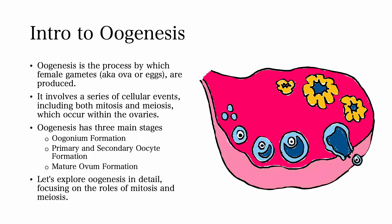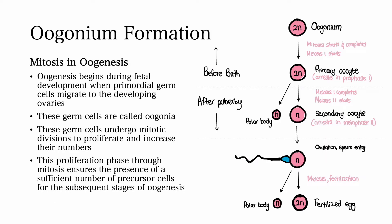Let's consider each in more detail. Oogonium formation — mitosis and oogenesis. Oogenesis begins during fetal development when primordial germ cells migrate to the developing ovaries. These germ cells undergo mitotic divisions to proliferate and increase their numbers. The germ cells are known as oogonia. This proliferation phase through mitosis ensures the presence of a sufficient number of precursor cells for the subsequent stages of oogenesis.